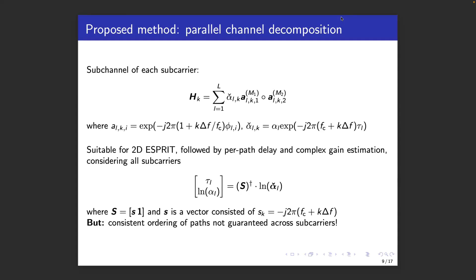Here we propose a new channel estimation method for the wideband channel. We first consider the channel matrix for each of the subcarriers. This is of a standard form suitable for two-dimensional Esprit, which provide us with the angle of arrival and angle of departure, as well as the complex channel gain for that subcarrier.